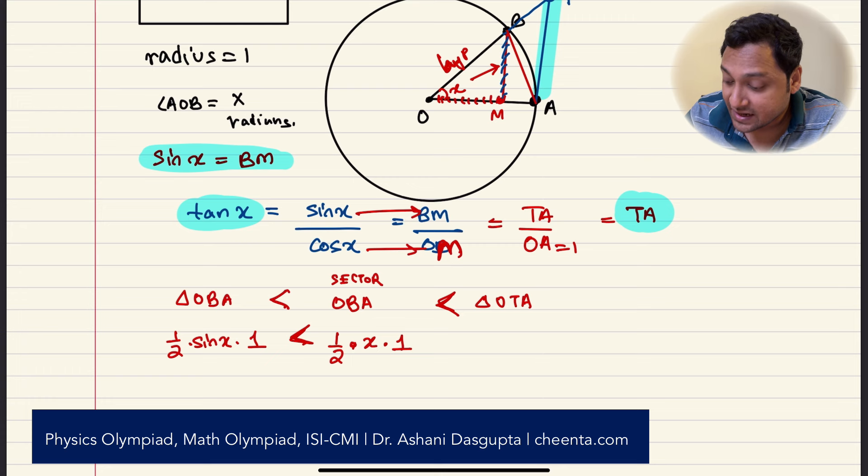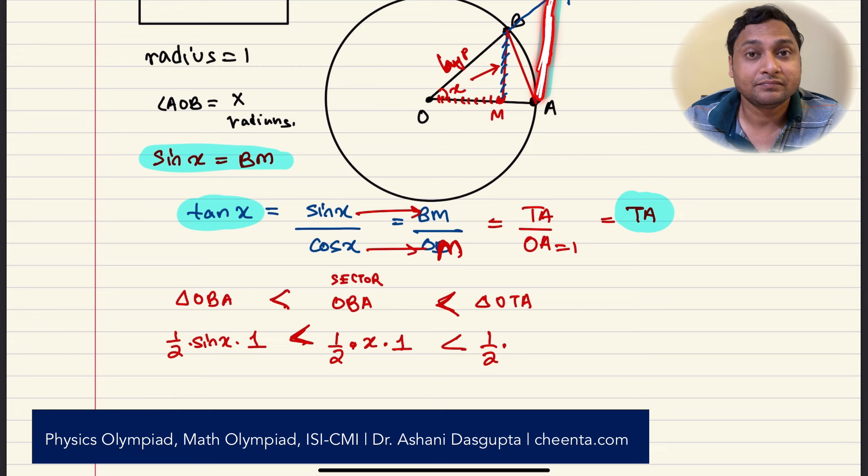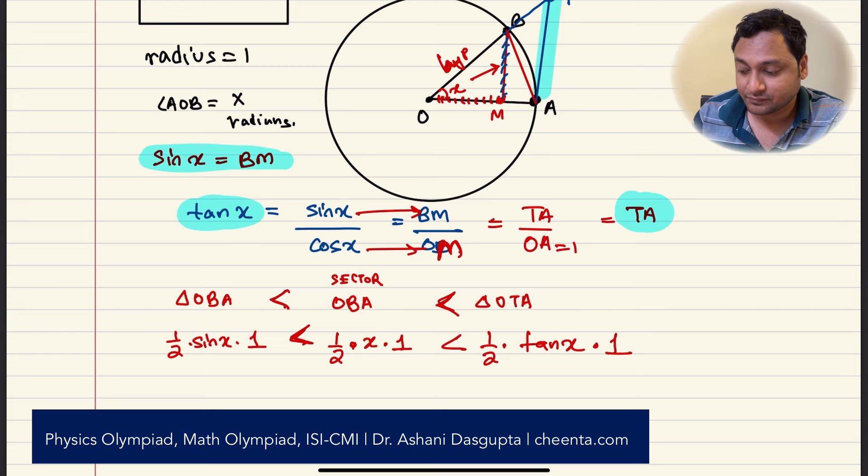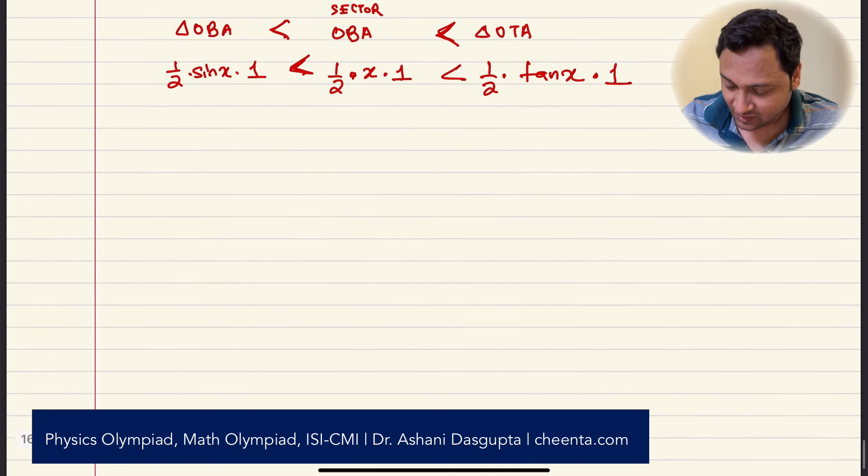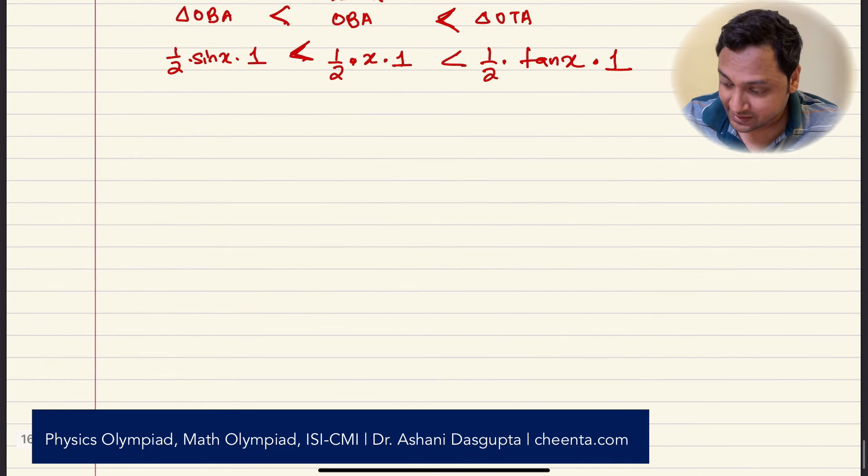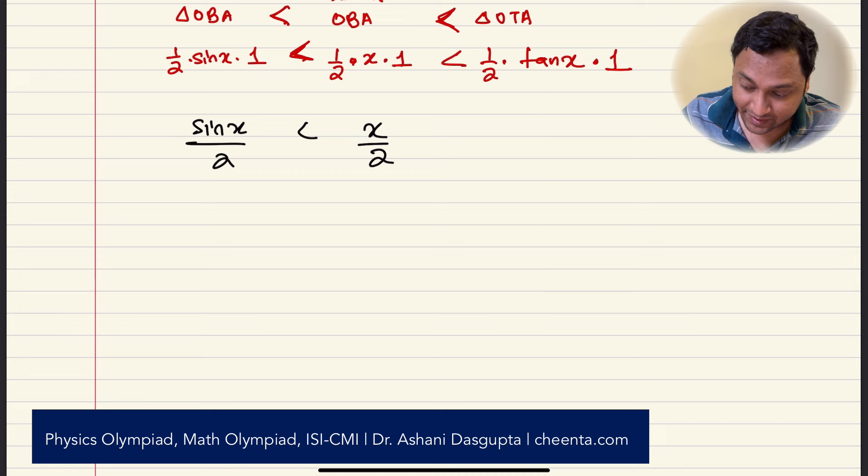That's the area of sector OBA. And what is the area of triangle OTA? Well, it's half into height is TA, which is the tangent of x. And the radius is OA, which is 1. So we have this inequality in place now. We're almost done.